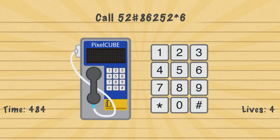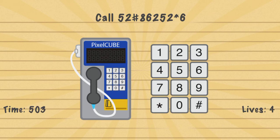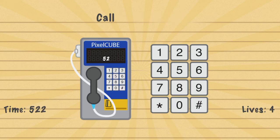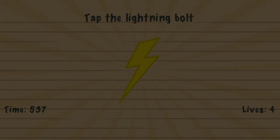Call 5-2-hashtag-8-6-2-5-2-asterisk-6. When you type two digits, the phone number will vanish, so you have to memorize it or write it down. So we have 5-2-hashtag-8-6-2-5-2-asterisk-6. Then you shake your device and tap the lightning bolt.